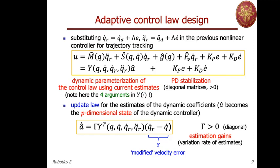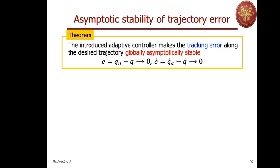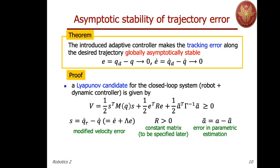This update law needs initialization at time zero — a-hat-zero is the initial estimate. The proof goes through the definition of a new Lyapunov candidate for the closed-loop system. The closed-loop system is made by the robot and the controller, and the controller has its own state, so we define a Lyapunov candidate on the whole state set: the robot state q and q-dot, and the dynamic controller state a-hat — the estimates of the dynamic coefficients.